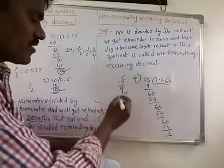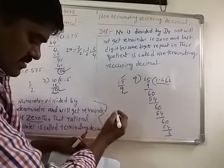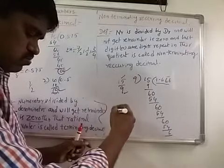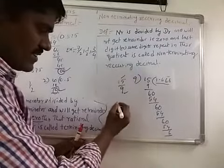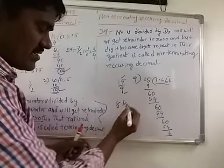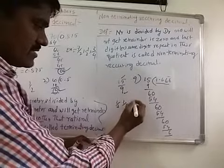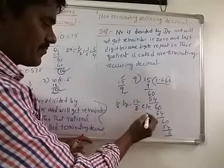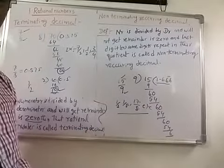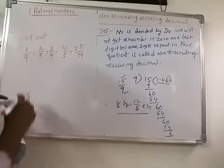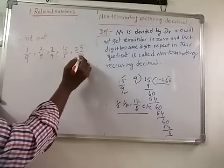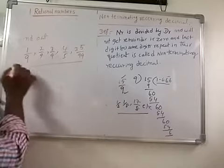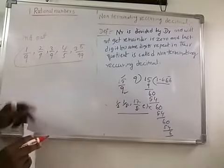Examples of non-terminating recurring decimals are 15/9, 1/3, 1/7, 17/8, etc. As an exercise, find out whether 1/9, 2/9, 3/9, 4/5, and 35/9 are terminating or non-terminating recurring decimals.